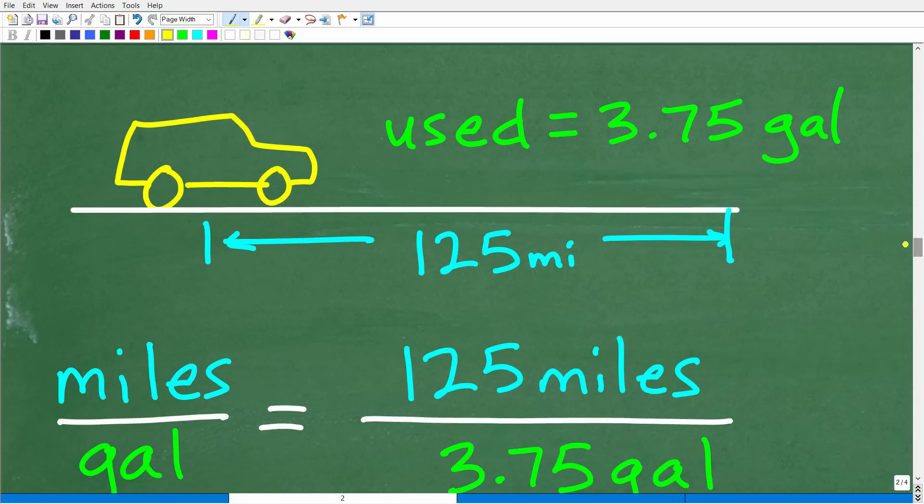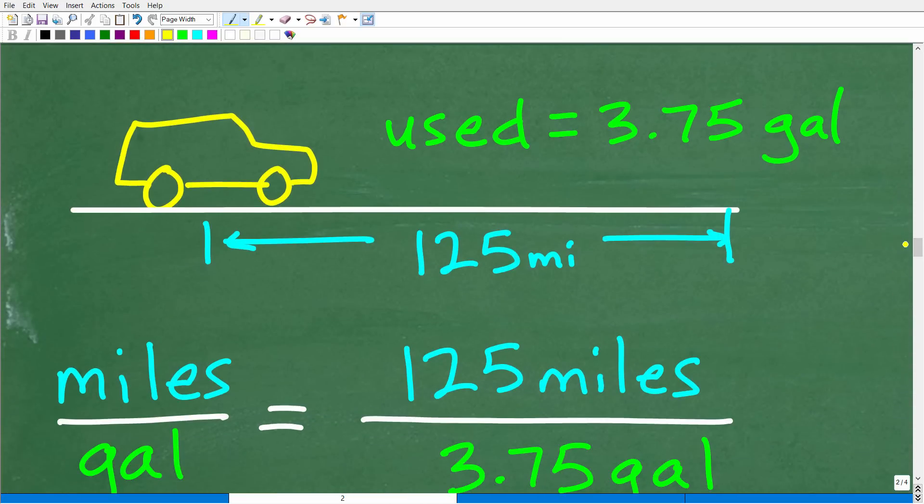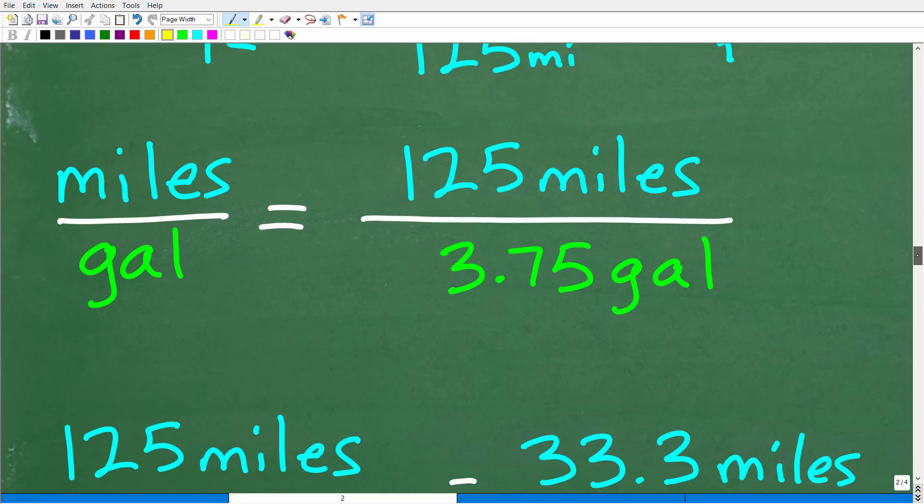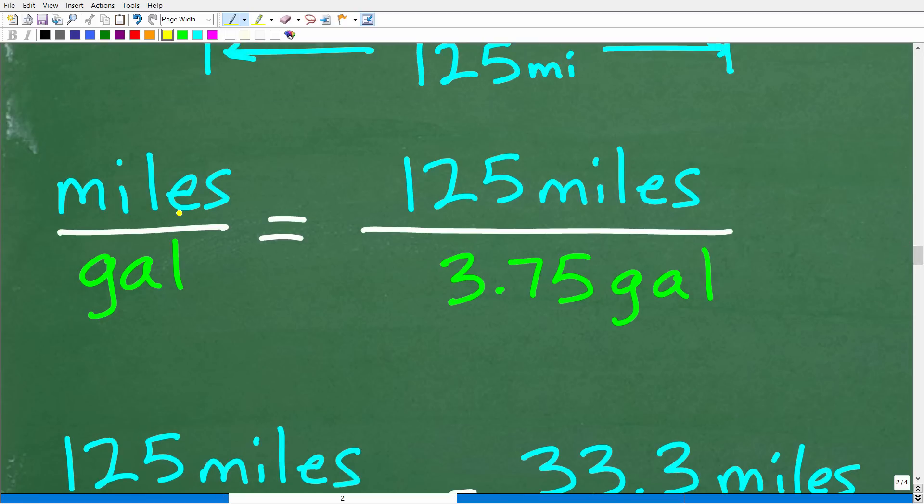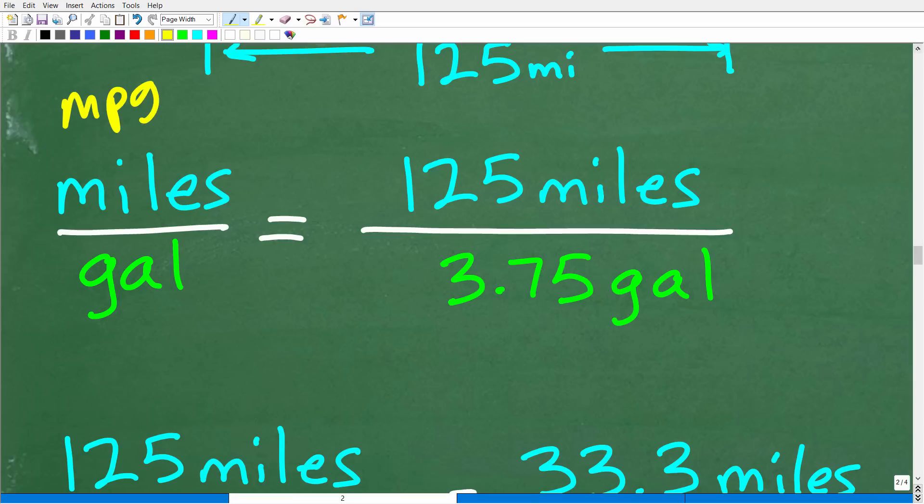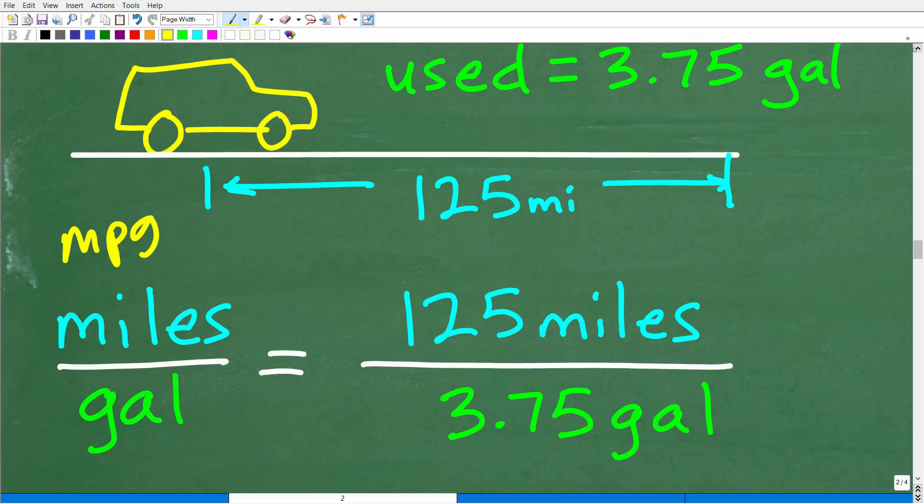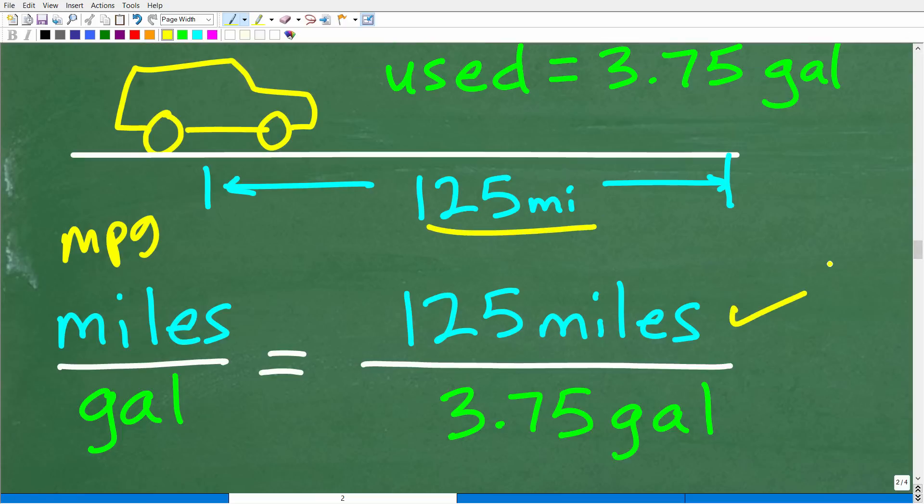All right. So here is our lovely vehicle. We use 3.75 gallons to go 125 miles. Let's calculate the MPGs. All right. So that's miles per gallon. And again, we're talking about a rate, but I'm going to think of that MPG as this fraction, miles per gallon. So now I could compare the pieces of information that I have, right, which is I have miles. Okay. So that's going to be in my numerator and I have gallons used, which is 3.75 gallons.